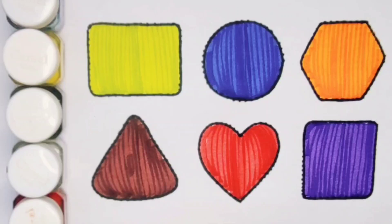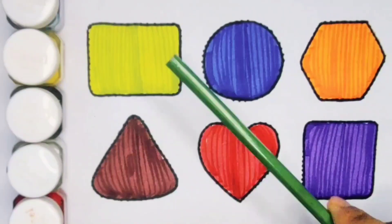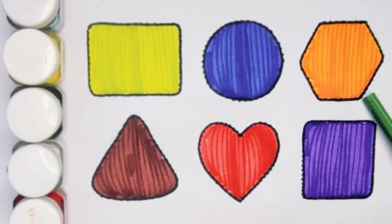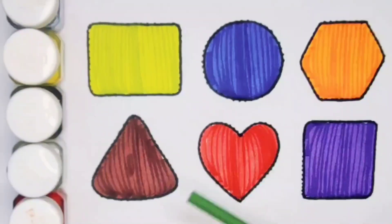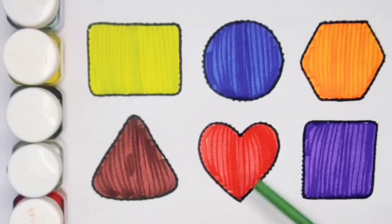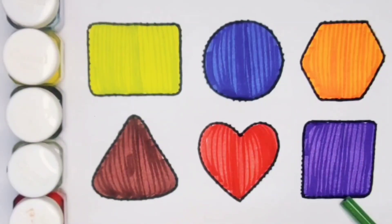What we learned: green color rectangle, blue color circle, orange color hexagon, chocolate color triangle, red color heart, and purple color square.